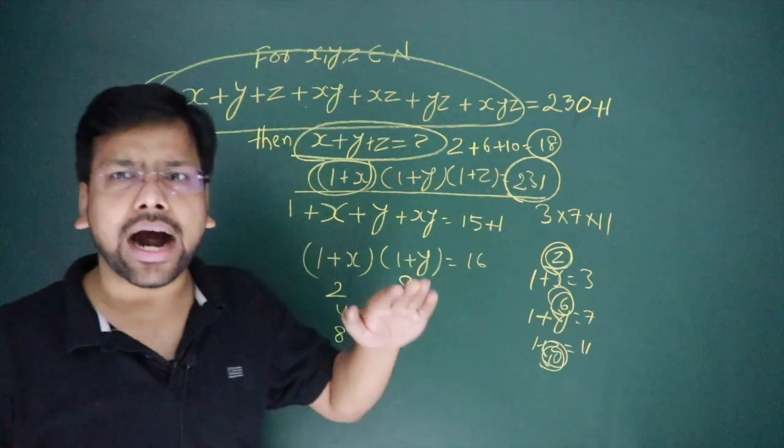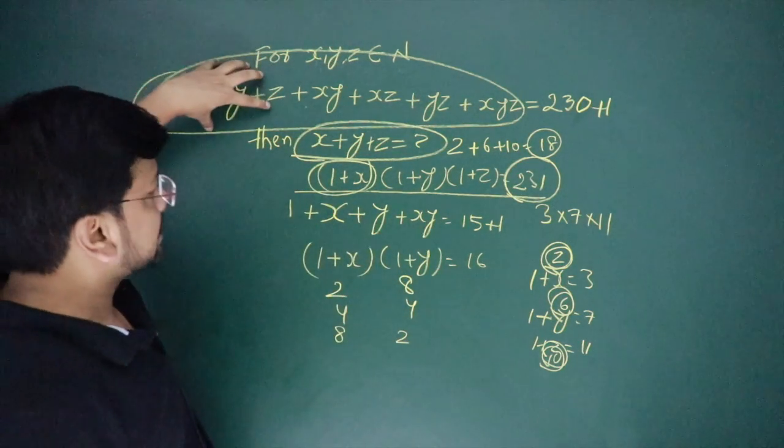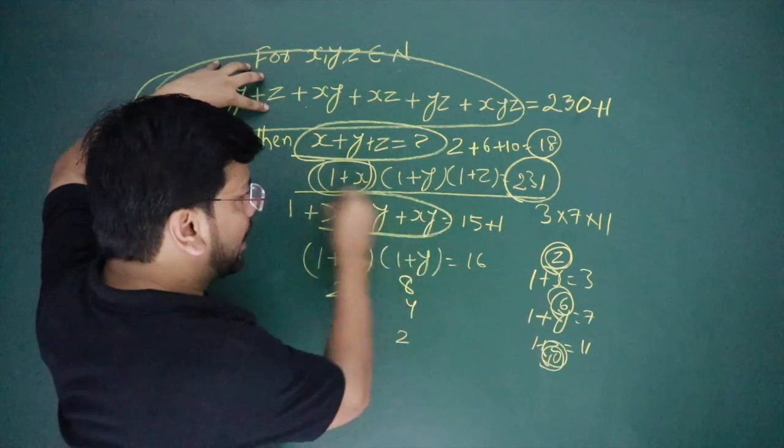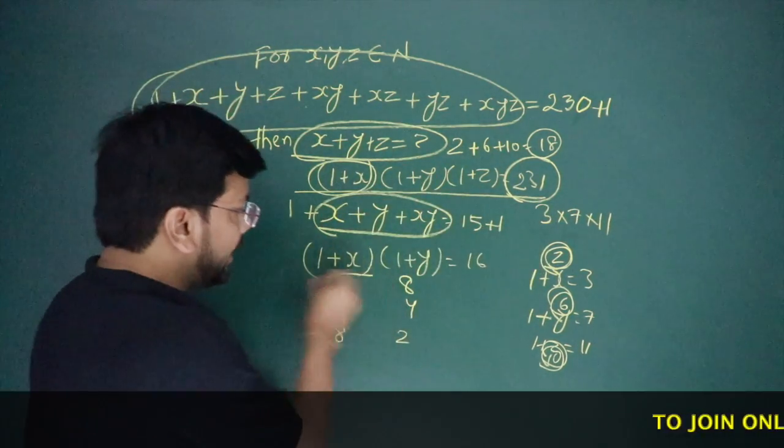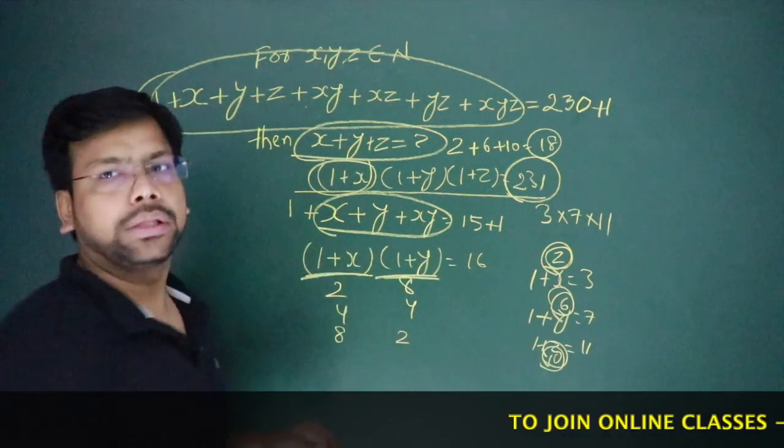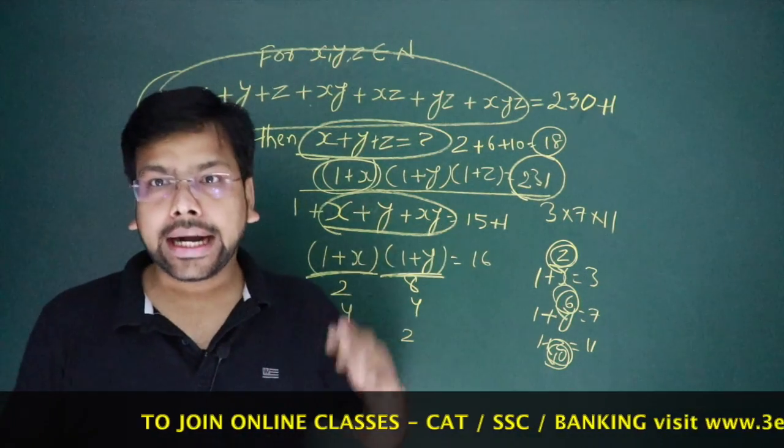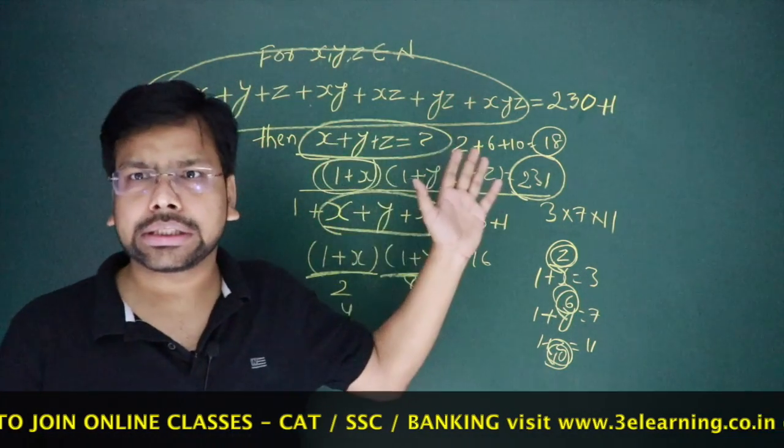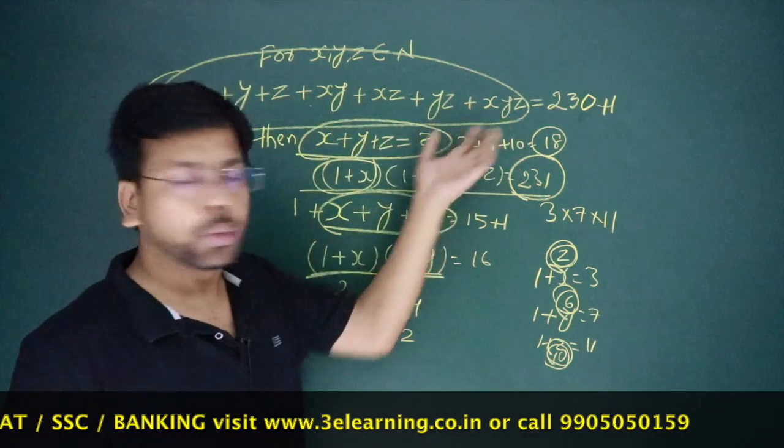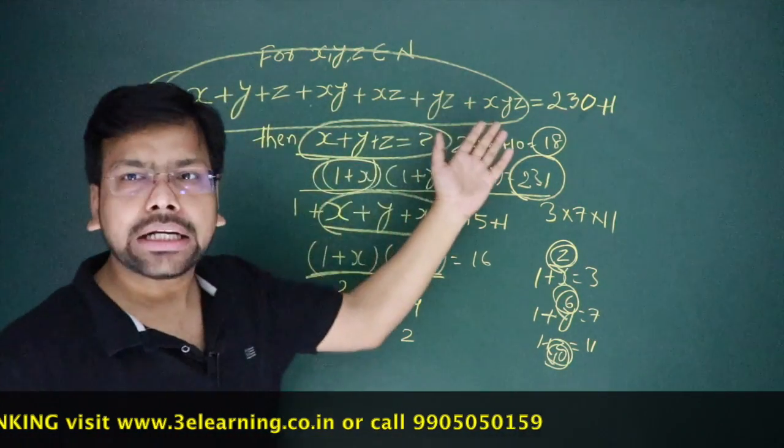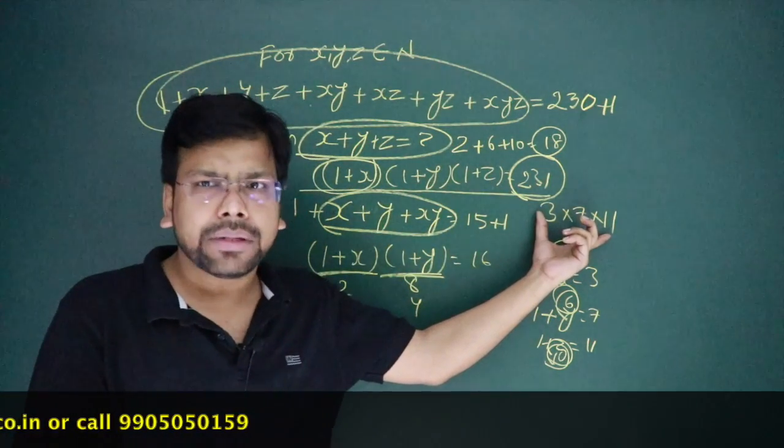This is very easy, hardly 4 to 5 seconds. If you have this type of question—X plus Y plus XY—you can add one on both sides and factorize. If you open it, you will see this. I hope it is okay to you. If you have this type of questions—single, double, triple—then you can add one on both sides, then factorize.